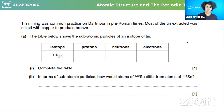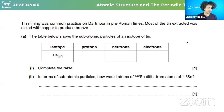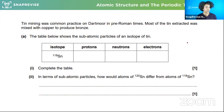Before we jump into the actual question, just a note on how we approach questions: the first few lines often feel pointless to read but sometimes contain key information. The intro mentions tin mining on Dartmoor in pre-Roman times and extracting tin to mix with copper to produce bronze - but actually nothing useful is in there. The next part says: 'the table below shows the subatomic particles of an isotope of tin' - fill in your protons, neutrons, and electrons. You'll need a periodic table.